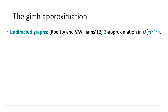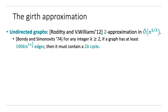On the approximation side, there has been a lot of work, especially for undirected graphs. The strongest result is due to Roditty and Williams — they gave a 2-approximation algorithm which runs in order N to the 5/3. The reason there has been a lot of work on the undirected case is the nice structural properties that undirected graphs have. For example, Bondy and Simonovitz showed that for any integer K, if a graph has at least around K times N to the 1 plus 1 over K edges, it must contain a 2K-cycle.